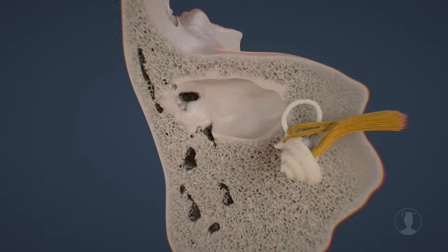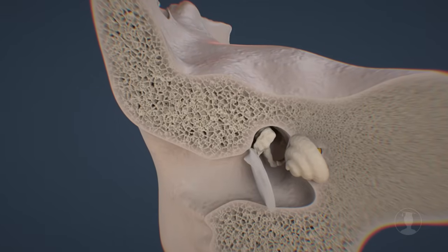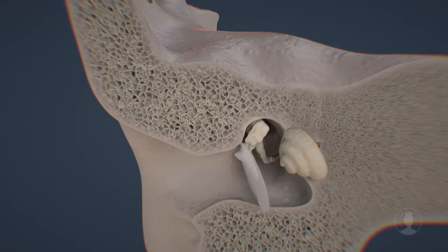These cavities are called mastoid cells, which are most likely intended to regulate the pressure within the tympanic cavity. Now let's take a closer look at our ossicles.